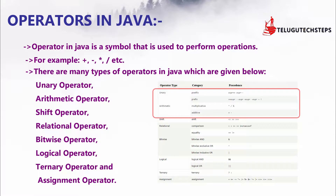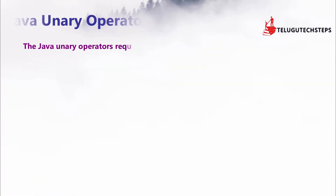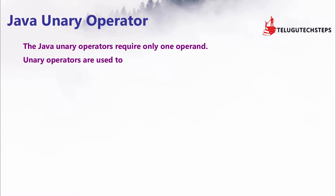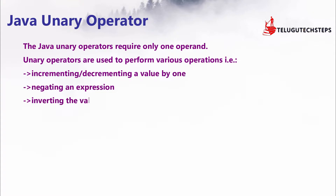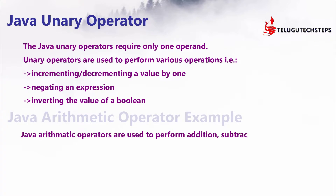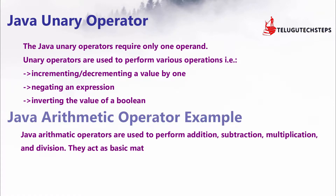Now let's get into Eclipse. Before we go into Eclipse, we need to understand this concept completely. A Java unary operator requires only one operand. Unary operators are used to perform various operations like incrementing, decrementing, negating expressions, and inverting the value of Booleans.